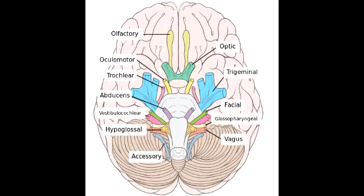What are the three cranial nerves that lie medially at the brainstem? The three cranial nerves that lie medially at the brainstem are cranial nerve 3, cranial nerve 6, and cranial nerve 12. Cranial nerve 3 is the oculomotor, cranial nerve 6 is the abducens, and cranial nerve 12 is the hypoglossal.